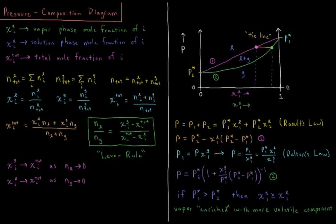Recalling from phase transitions: the boiling point is when the external pressure equals the vapor pressure. For pure liquid one, gas would exist at pressures up to P₁*; for pure liquid two, the liquid would persist until P₂*. At intermediate mole fractions, liquid and gas coexist, and the relative amounts of liquid and gas are given by the lever rule based on the total mole fractions of each component in the liquid and gas phases.